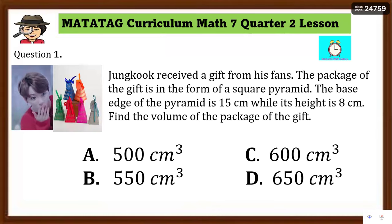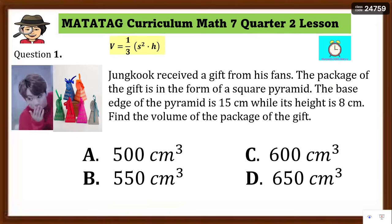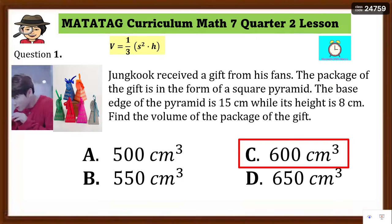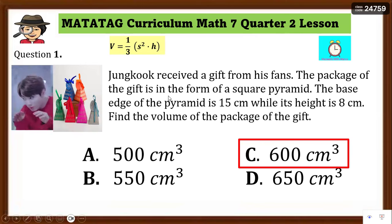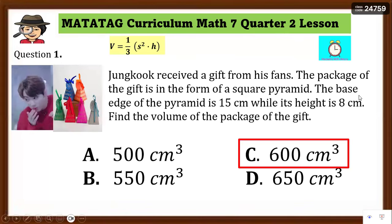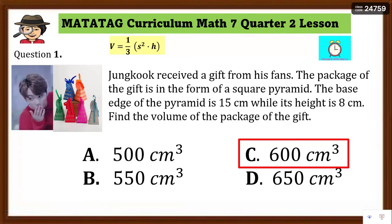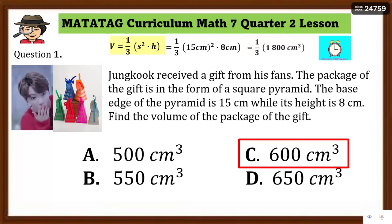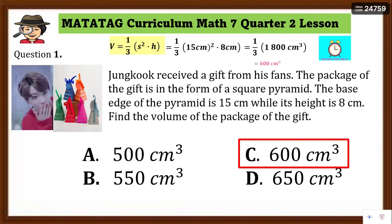Let's check your understanding — Assessment number 1. Jungkook received a gift from his fans. The package is in the form of a square pyramid with a base edge of 15 centimeters and a height of 8 centimeters. What is the volume of the package? Substitute: s = 15 cm, h = 8 cm. V = (15² × 8) / 3 = (225 × 8) / 3 = 1,800 / 3 = 600 cubic centimeters. The answer is letter C, 600 cubic centimeters.